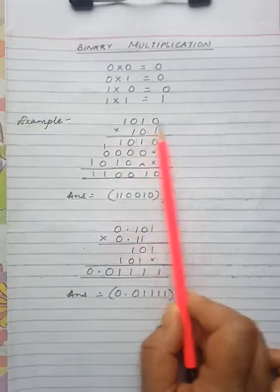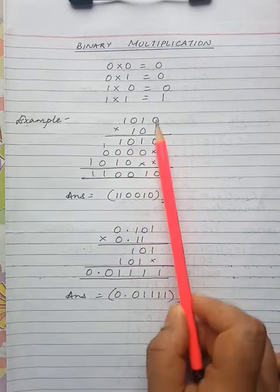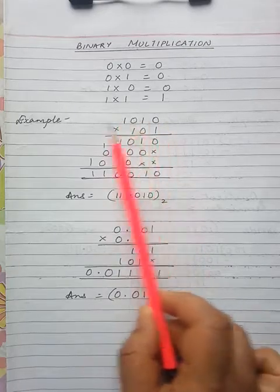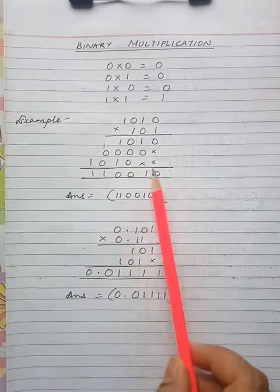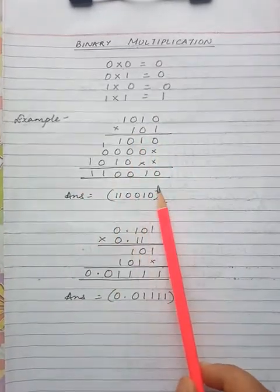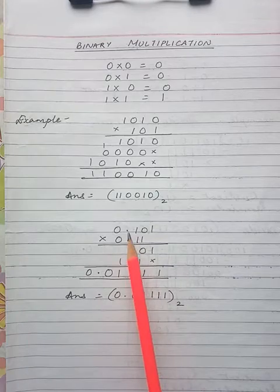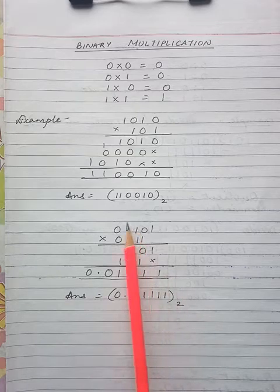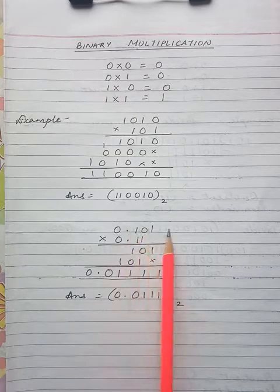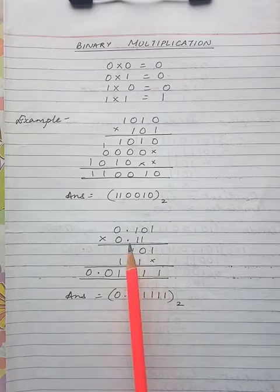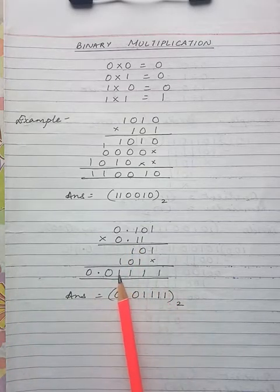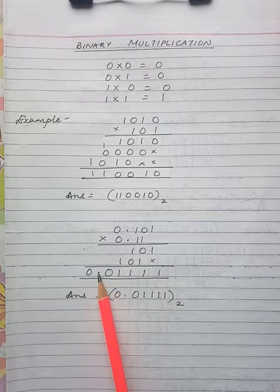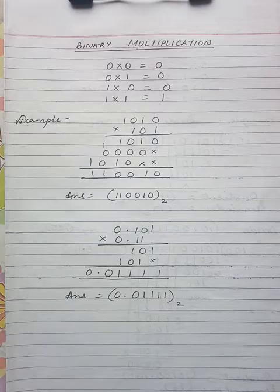Take this example: 1010 multiplied by 101. Simply multiply — first multiply the whole upper number by 1, you get this result. Then put a cross here and multiply by 0, you get zeros. Again put 2 crosses and multiply by 1, you get this. Then you add them and get the final answer. If there is a decimal point, then simply multiply the numbers first. Count the digits after the decimal point — if there are 3 values here and 2 values here, that means 5 digits total after the decimal. So put the decimal point to give 5 digits after it. This is how binary multiplication is done.